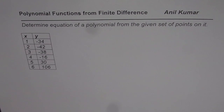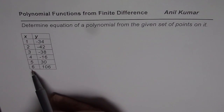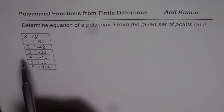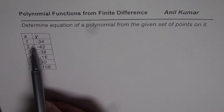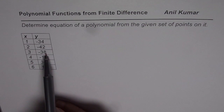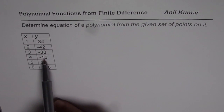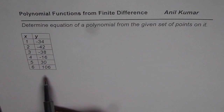The question here is: determine the equation of a polynomial from the given set of points on it. We are given 6 sets of points, with x and y coordinates being (1, -34), (2, -42), (3, -38), (4, -16), (5, 36), and (6, 106).